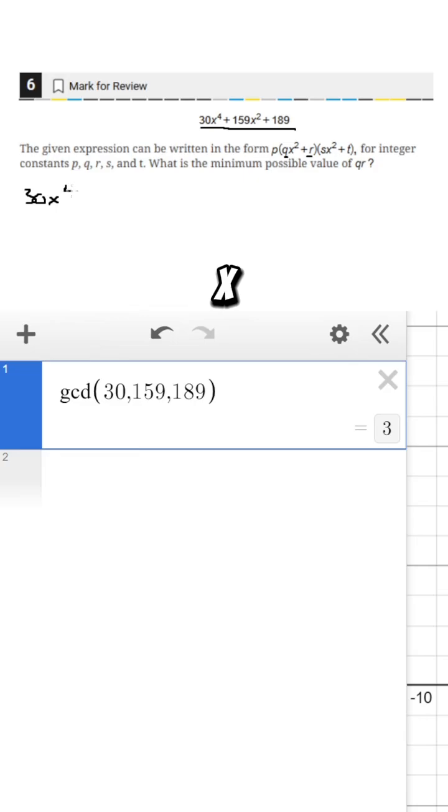So I'll then write that 30x to the power of 4 plus 159x squared plus 189 is going to be equal to three times qx squared plus r times sx squared plus t. Now all I have to do is come into Desmos and actually write this.